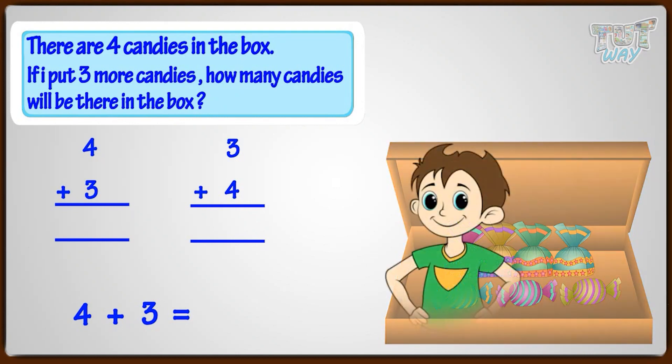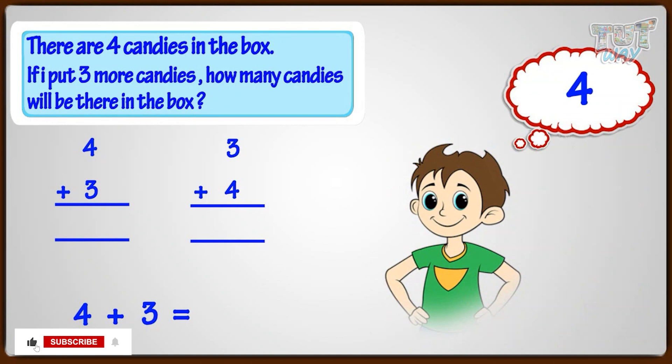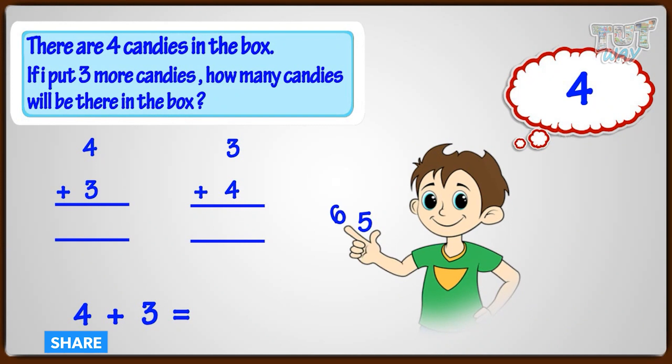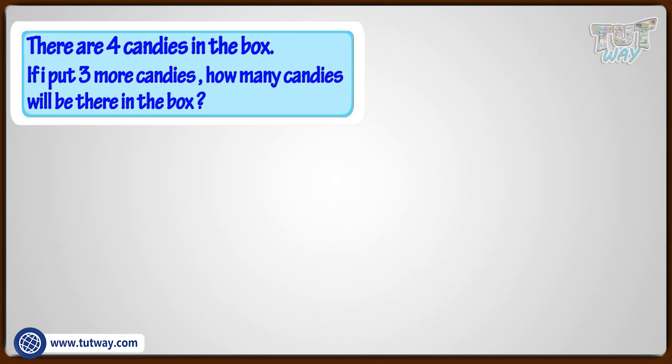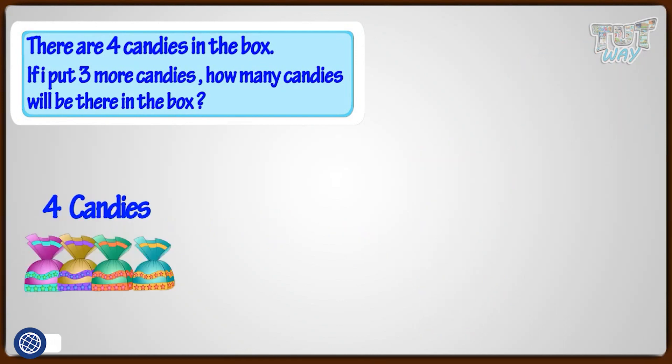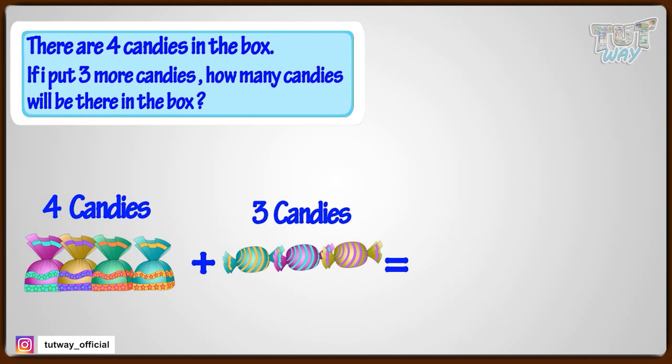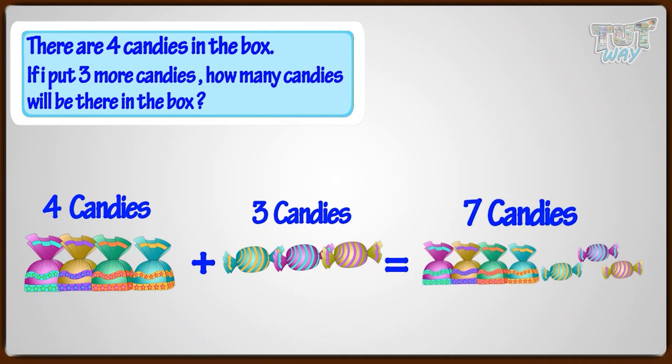Think the bigger number. That is 4. And count up 3. 5, 6, 7. Yeah! 4 plus 3 equals 7. 4 candies plus 3 candies will be 7 candies.